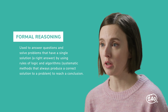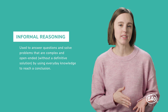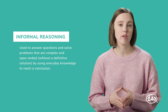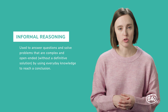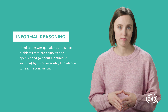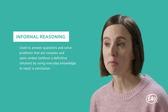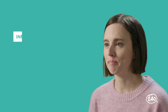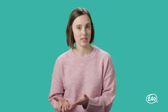So an example of formal reasoning would be: how much paint should we buy to paint the bathroom? Informal reasoning is used to answer questions and solve problems that are complex and open-ended, without a definitive solution, by using everyday knowledge to reach a conclusion. So an example of informal reasoning would be: do you support the city implementing a bike-sharing program? Here's a helpful hint: formal reasoning problems have a single right answer, while informal reasoning questions have more open-ended conclusions.